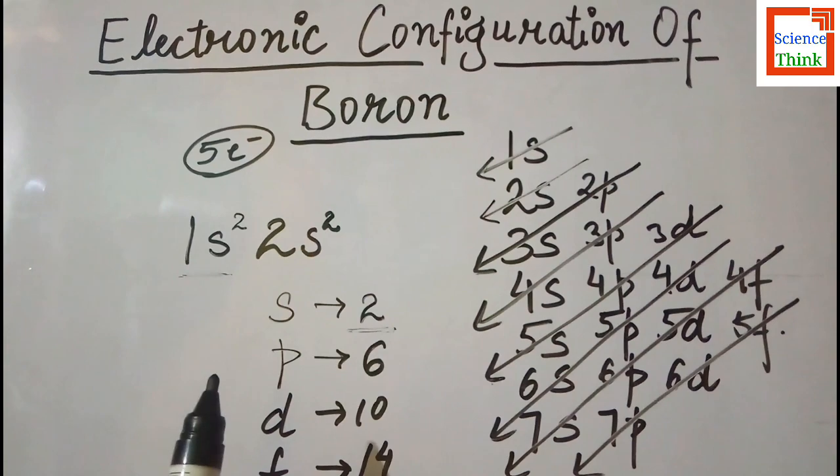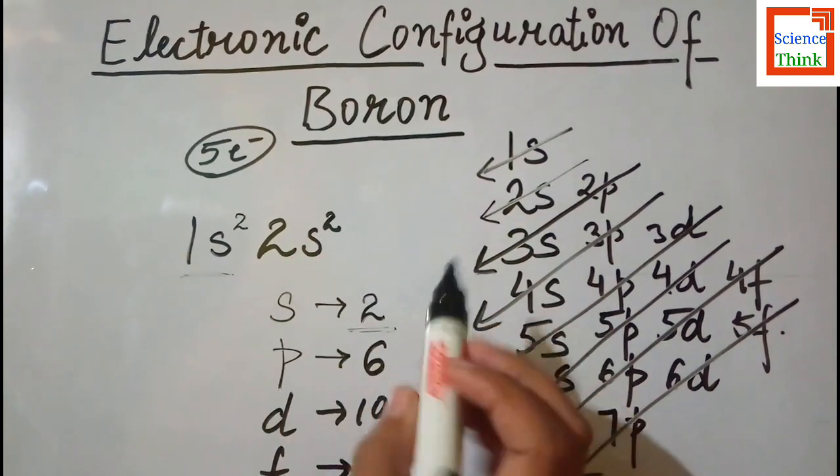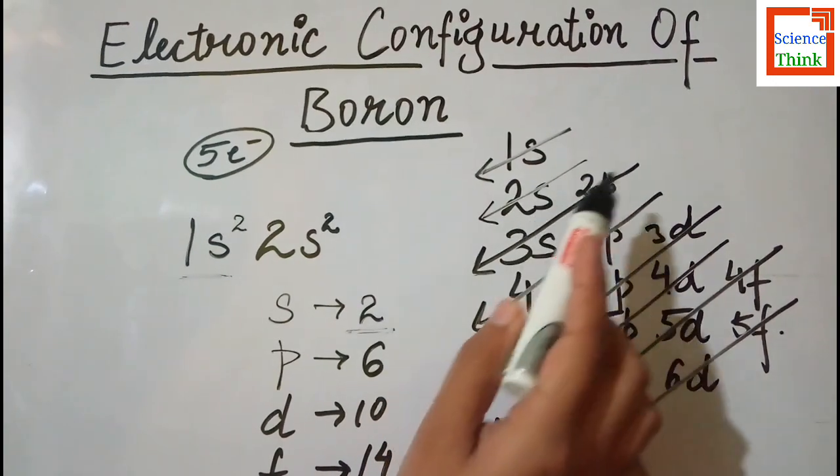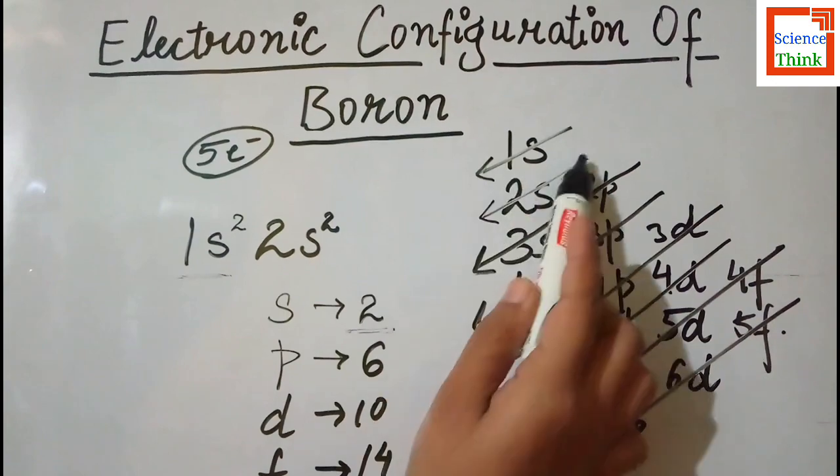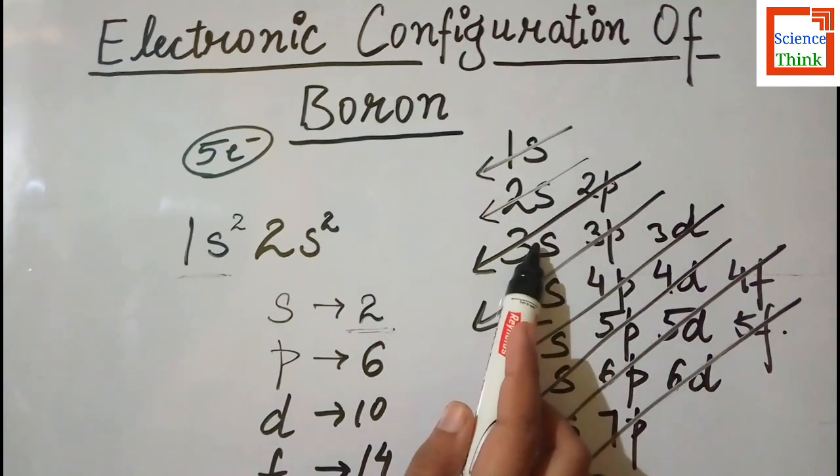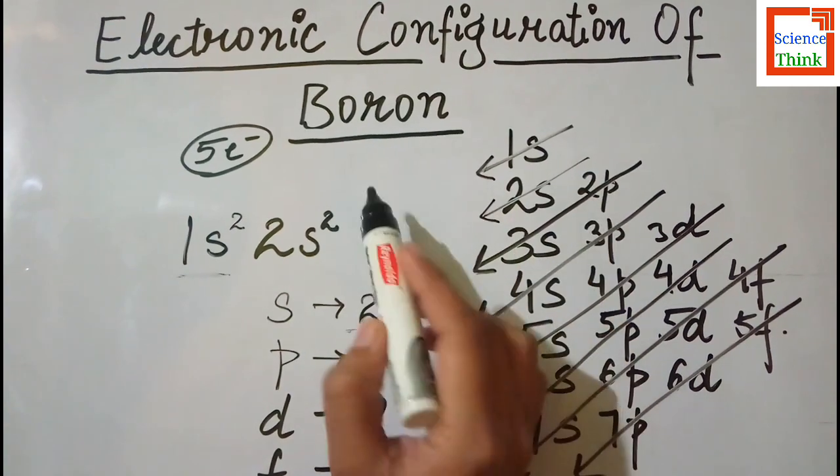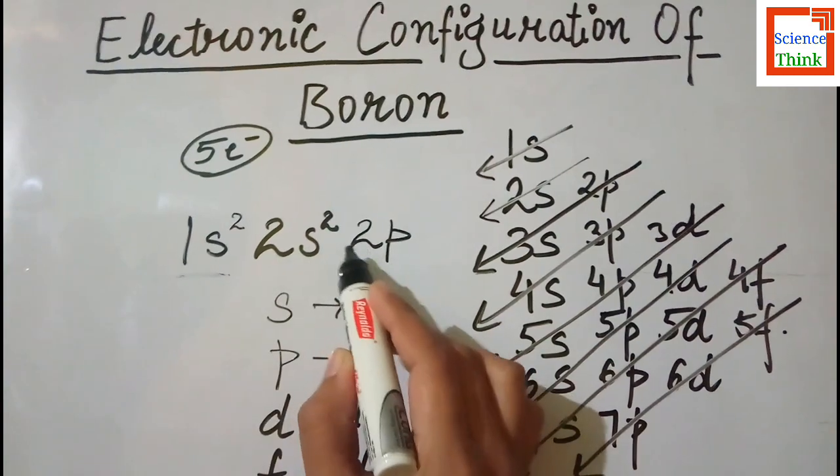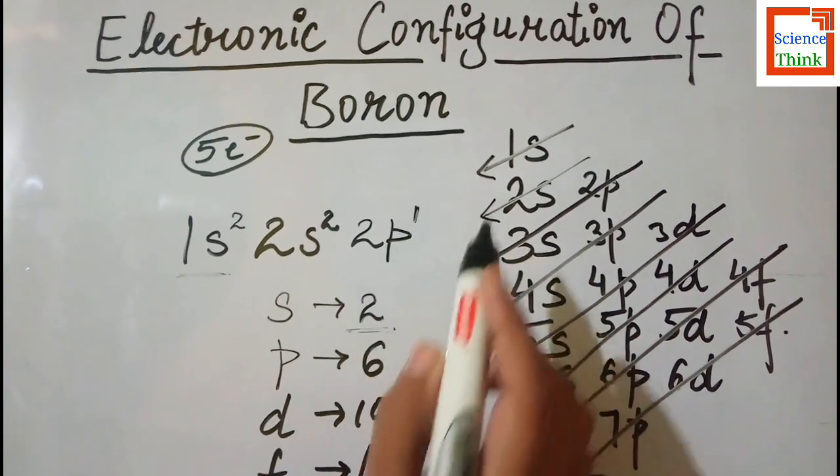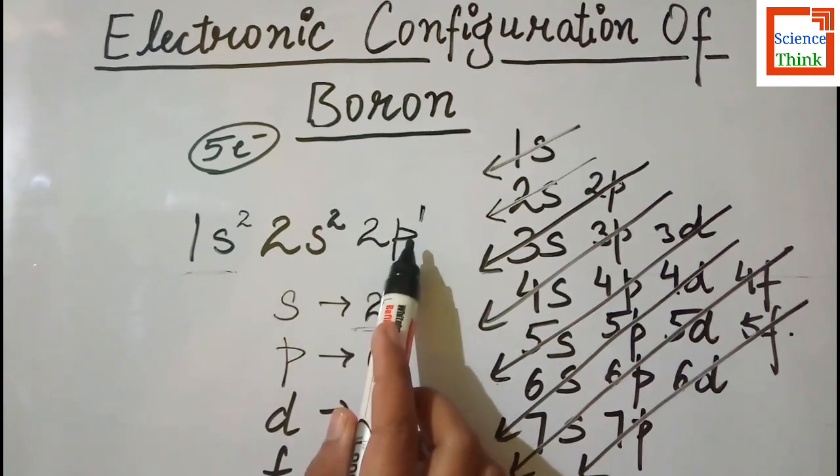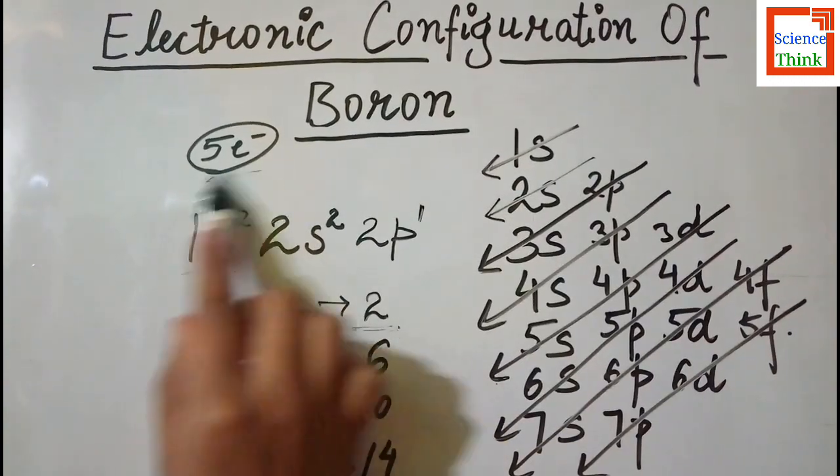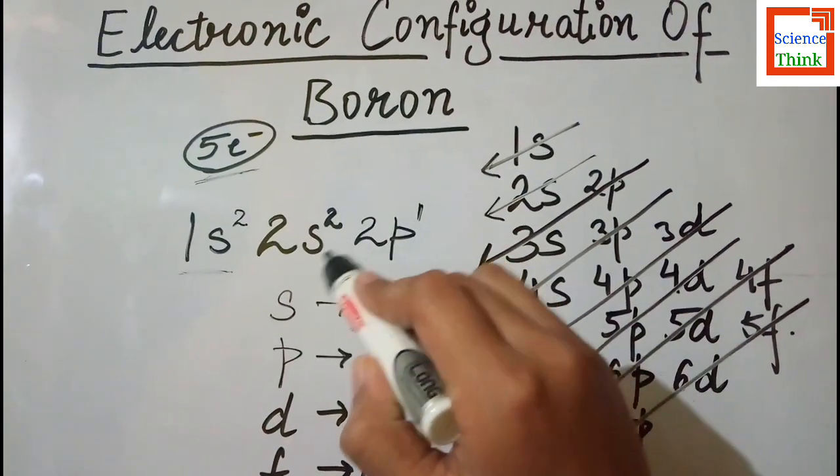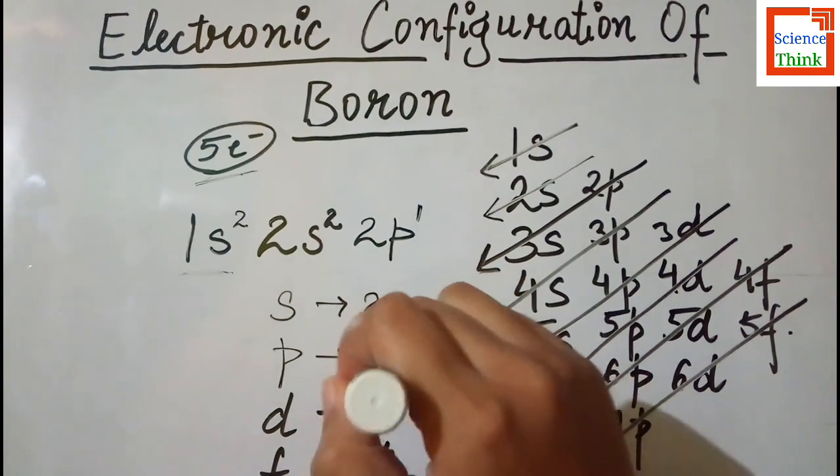Now we are left out with only 1 electron. So we will see after 1s, 2s which orbital is going to be filled. Here we have 1s, 2s, then 2p and 3s. So firstly we will fill the 2p orbital. So we have a configuration of 1s², 2s², and 2p¹, because 2 plus 2 plus 1 is going to be 5 electrons.